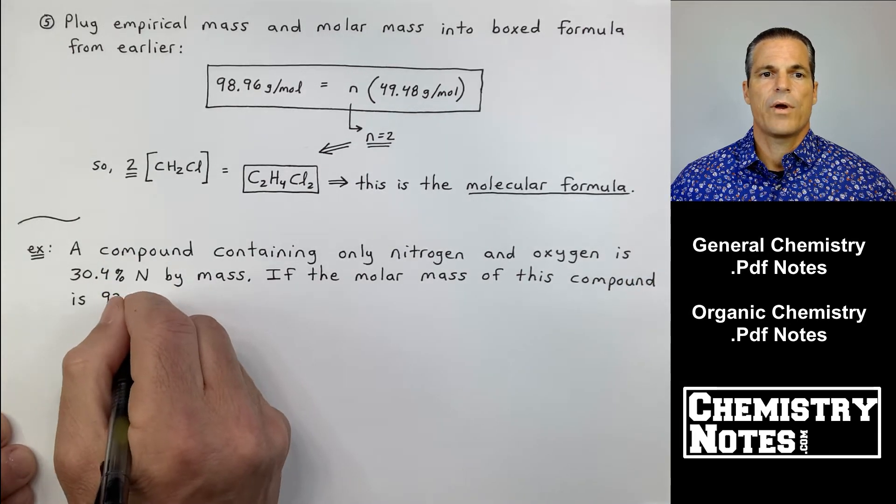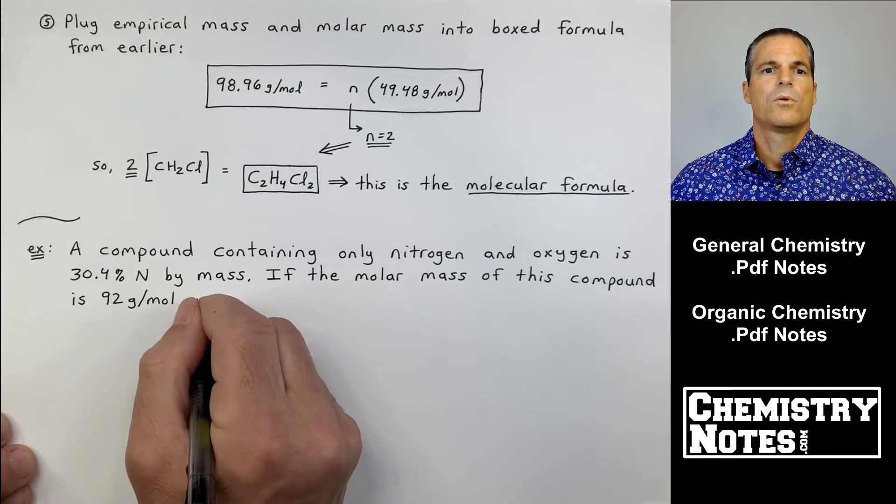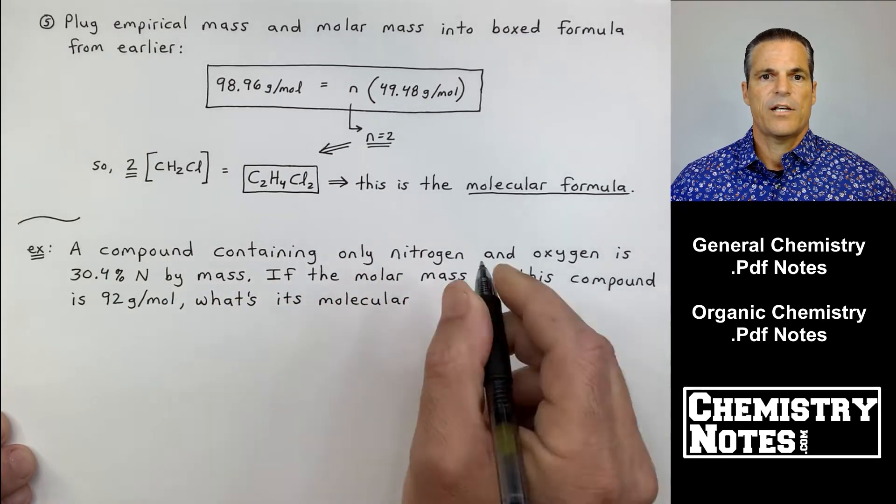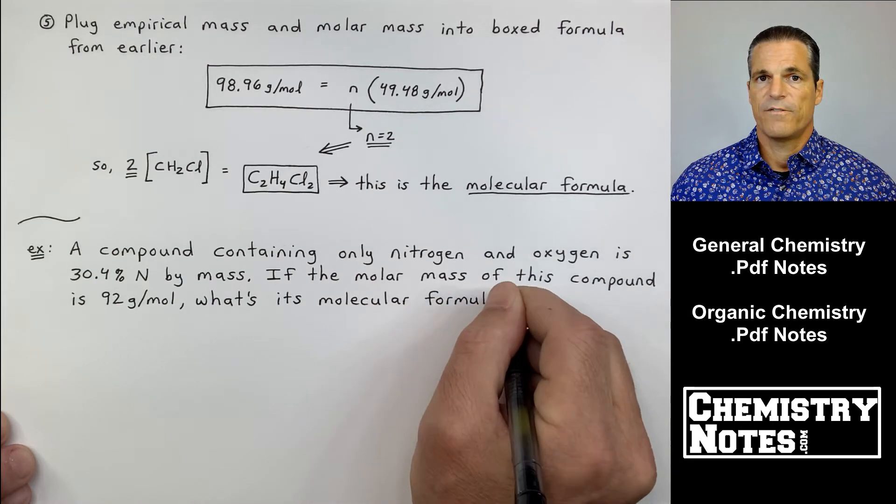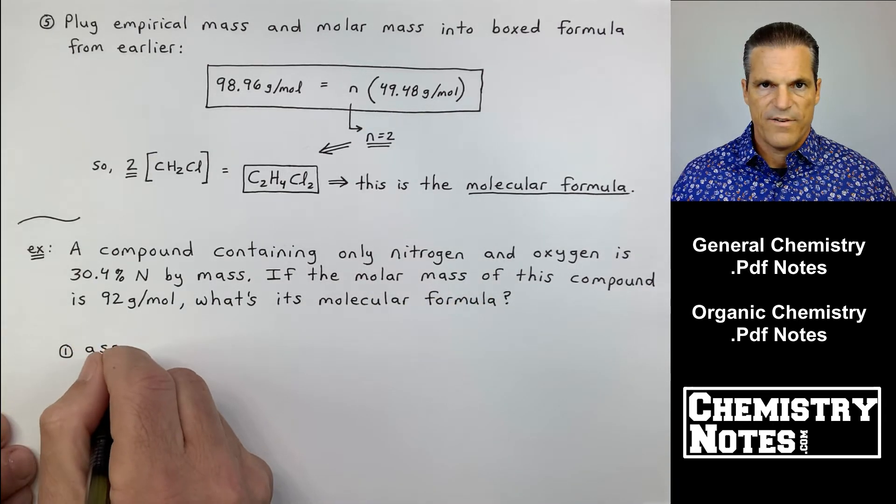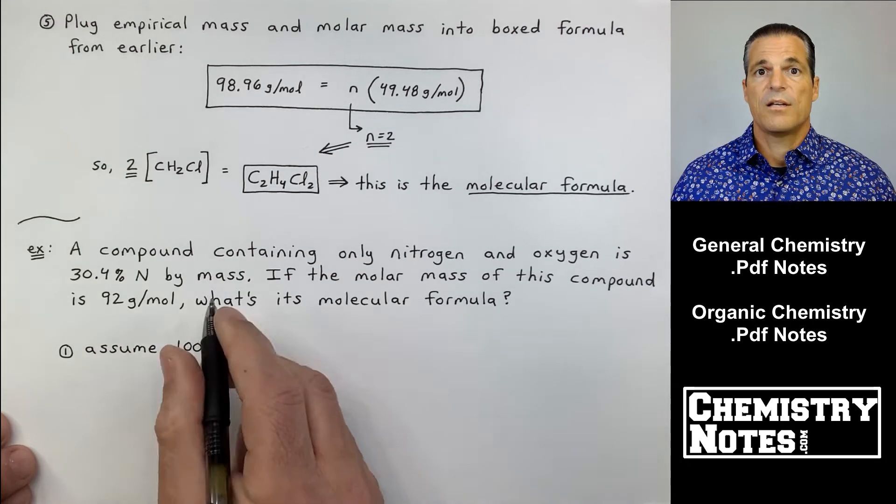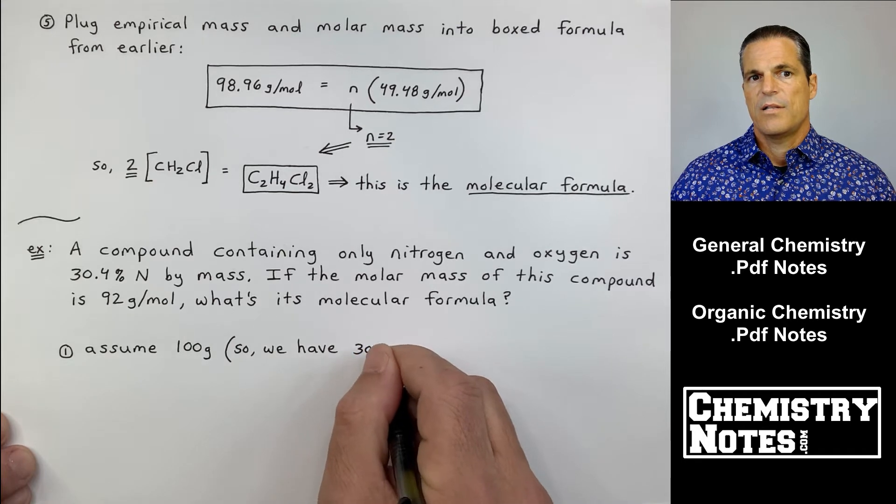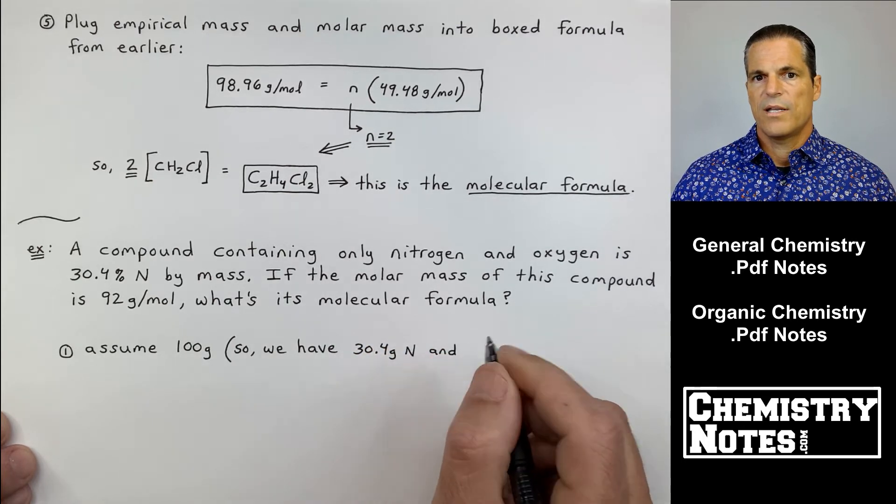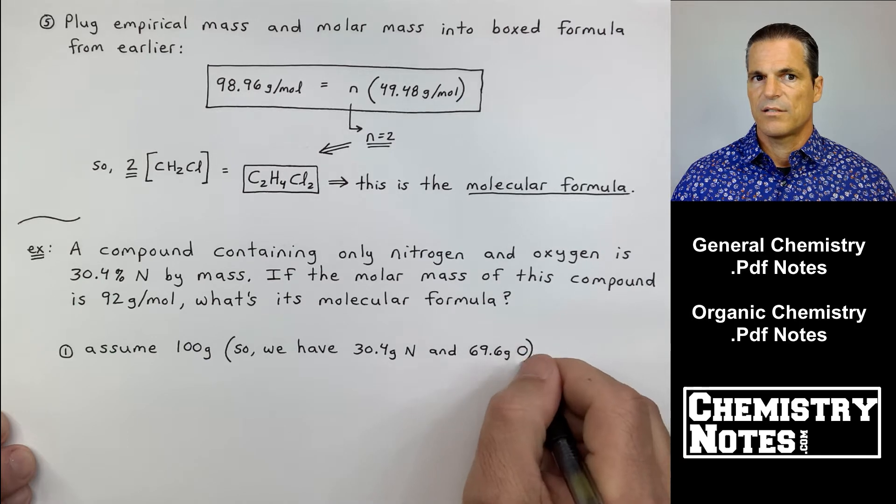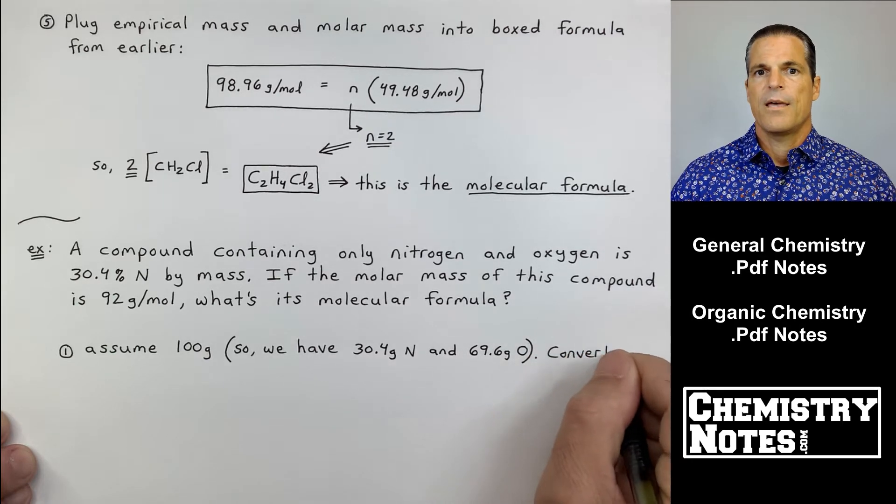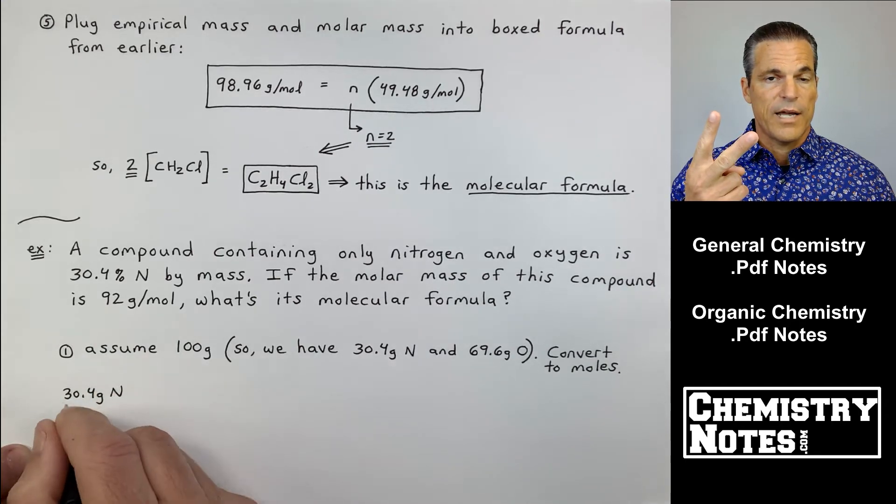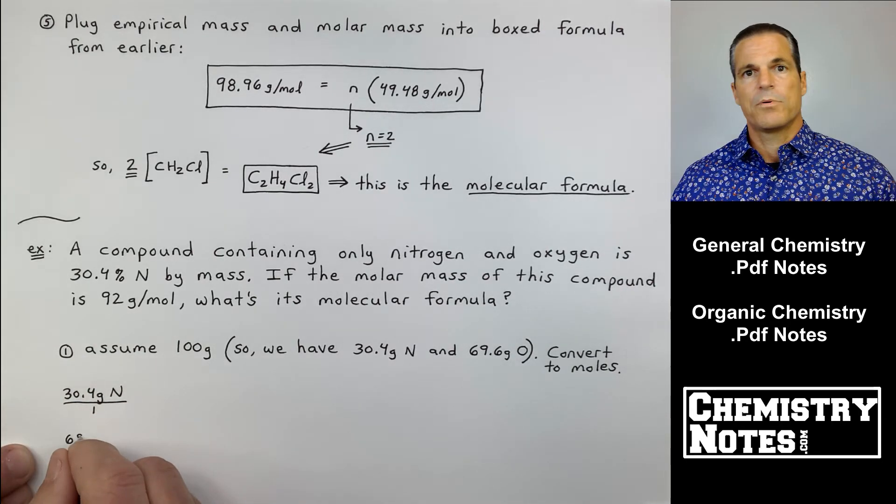Compound containing only nitrogen and oxygen is 30.4% nitrogen by mass. If the molar mass of this compound is 92 grams per mole, what is the molecular formula? Notice how they don't come out and directly ask you to find the empirical formula. There's no way to find the molecular formula this way unless we find the empirical formula first.